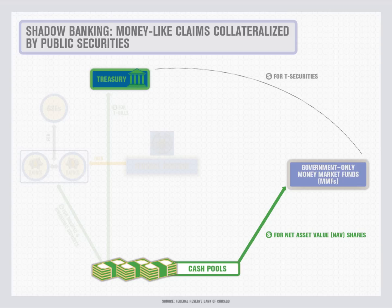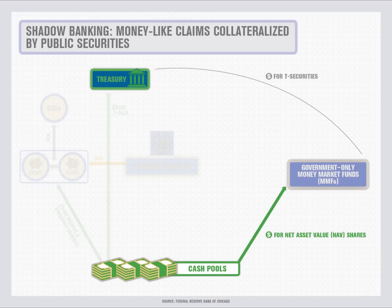Private agents produce these assets to meet the demand for cash-like investments. One of the more prominent examples of private money-like claims are shares issued by government-only money market mutual funds. Money market funds offer shares that have cash-like characteristics; the funds promise to redeem the shares for cash on demand at a fixed price. One way the fund does this is by investing its pool of money in slightly longer-term Treasury securities, which have no default risk but are riskier because changes in interest rates can change their present value, or market price.